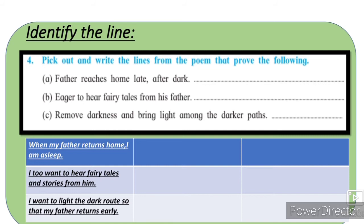'Identify the line' activity میں ایک line دی ہوئی ہے، poem میں سے actual line لکھنی ہے۔ پہلا: 'Father reaches home late after dark' — جواب: 'When my father returns home, I am asleep.' دوسرا: 'Eager to hear fairy tales from his father' — جواب: 'I do want to hear fairy tales and stories from him.' تیسرا: 'Remove darkness and bring light among the darker paths' — جواب: 'I want to light the dark roots so that my father returns early.'